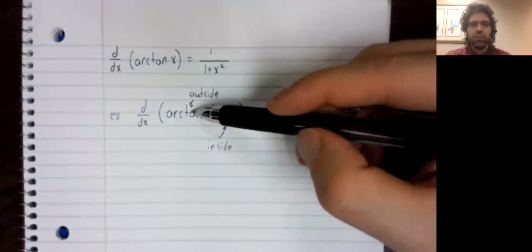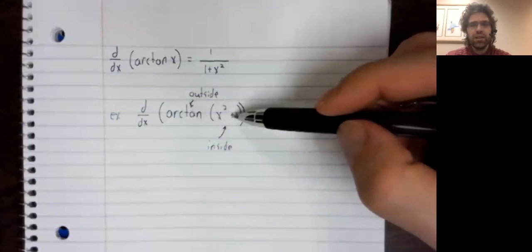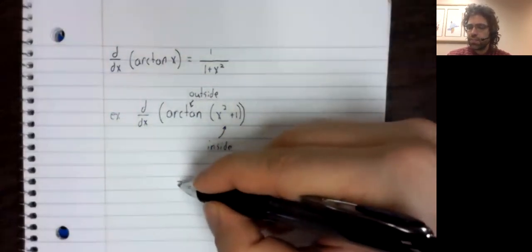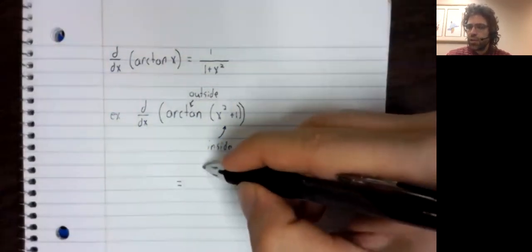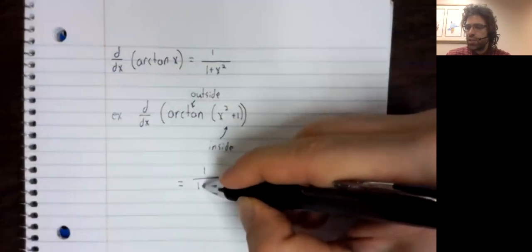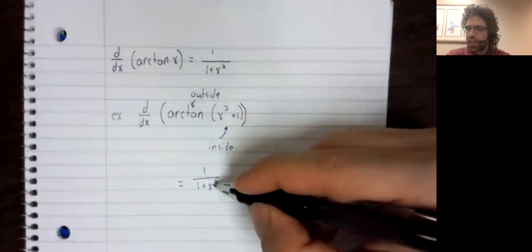We've got an outside function and an inside function. And what the chain rule says is to take the derivative of the outside function.